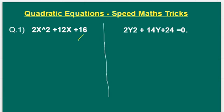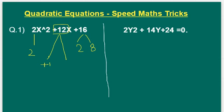Here, the constant is 16. Split 16 as 2 × 8 = 16. The x² coefficient is 2 and the middle term is +12. We have to split this middle term +12 into 2 numbers such that their addition is +12 and their multiplication is 2 × 2 × 8 = 32. Split +12 into +4 and +8: 4 × 8 = 32 and 4 + 8 = 12.